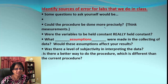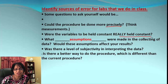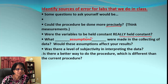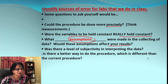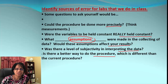If we want to identify the sources of error, here are some questions worth asking: Could the procedure be done more precisely? Can we get more precise measurements? Did we keep variables constant that were supposed to be constant, or were they changing? What about the assumptions we made while collecting data — did they actually affect our results? Did we select and interpret data correctly? Did we use the correct formula and the correct graphing?